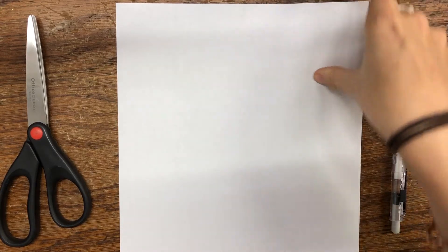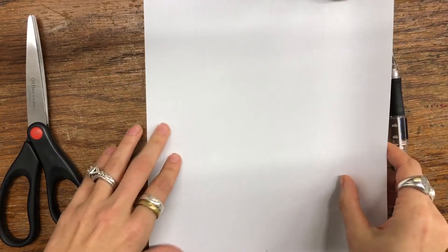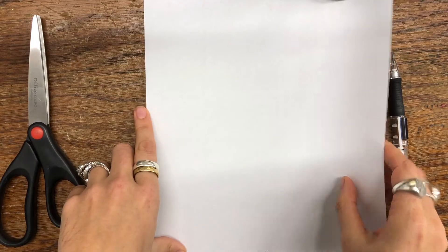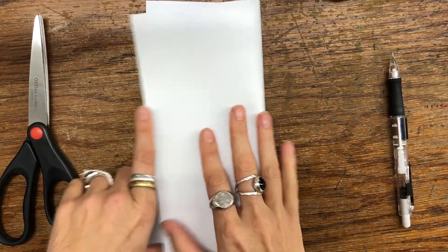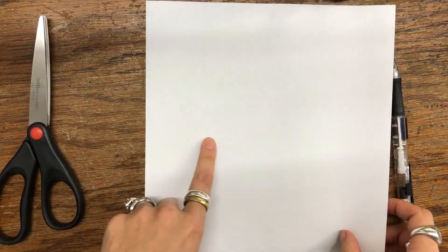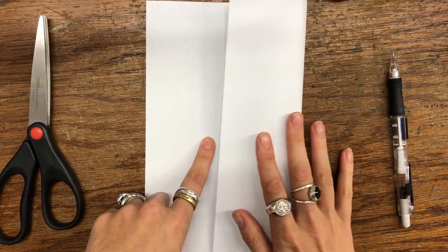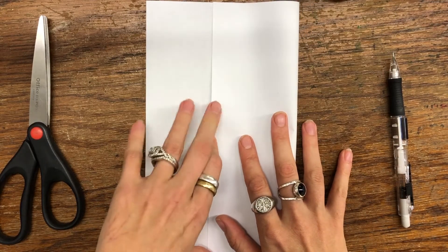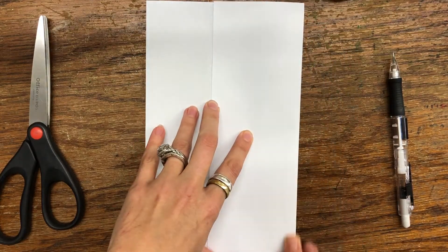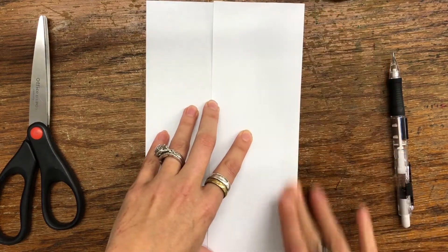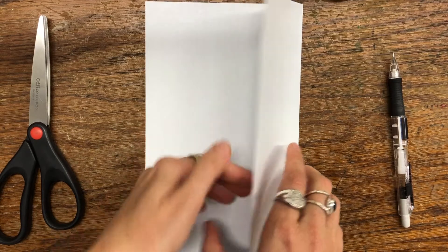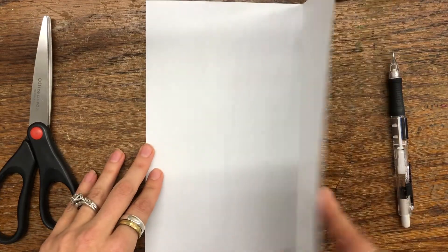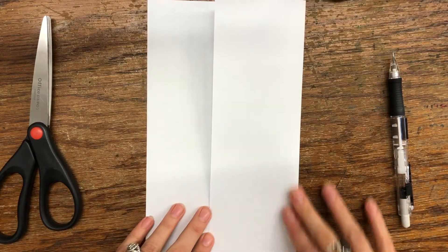I'm going to take the outside edge and fold it towards the middle so it overlaps with the other side. I don't want to go all the way over though because it's going to hide part of my image, so I'm going to fold it some of the way over. You pick based on the image you decide on. Press that crease down firmly so that you have a flap that opens and closes.